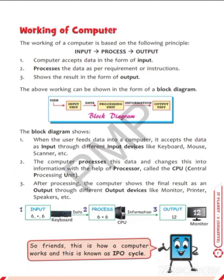After processing, the CPU gets the answer and gives us information — that means 4. 2 plus 2 is 4. That 4 is information, and that information is given to us with the help of output devices: monitor, printer, and speaker.